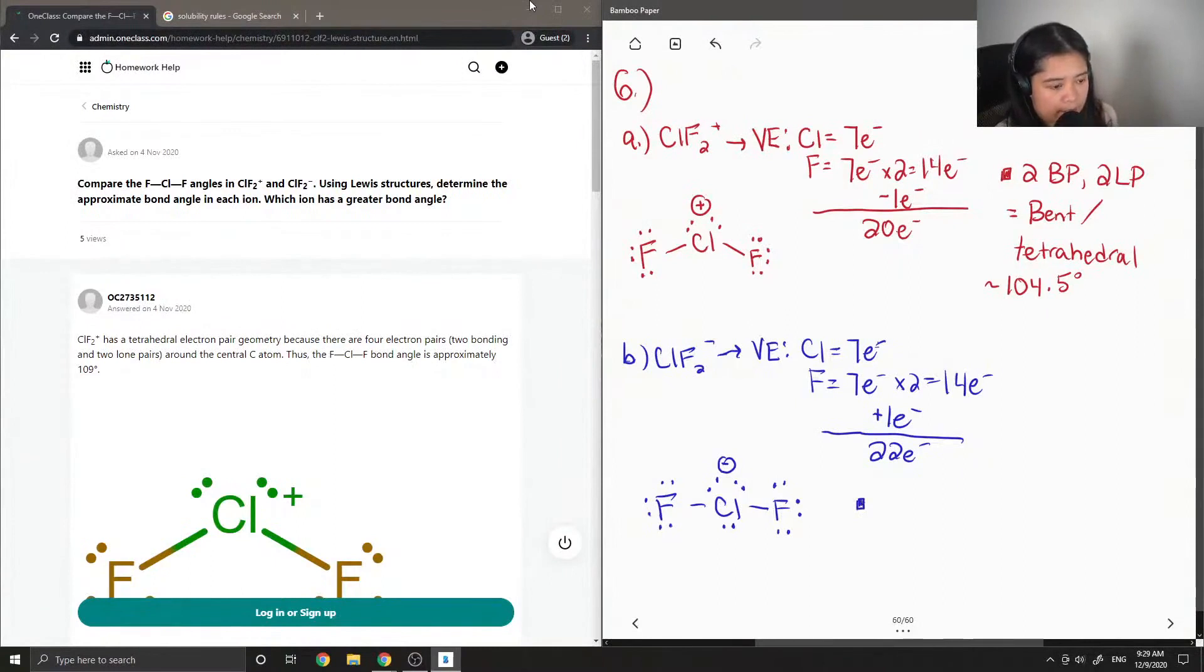If we analyze this compound, there are still two bonding pairs, meaning it is bonded to two fluorines. But this time there are three lone pairs on the chlorine atom. So this gives us a different VSEPR shape and different molecule configuration. If we were to look it up on a VSEPR chart, this would be trigonal bipyramidal.